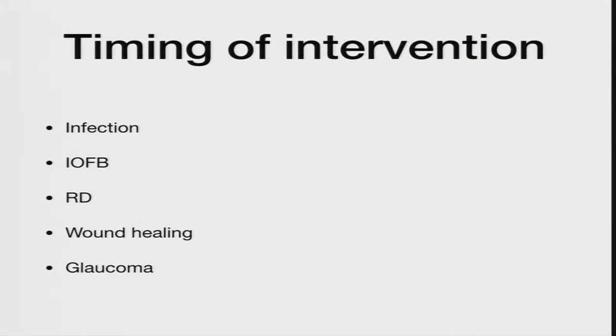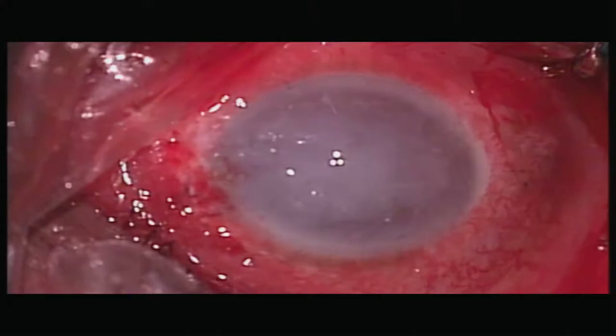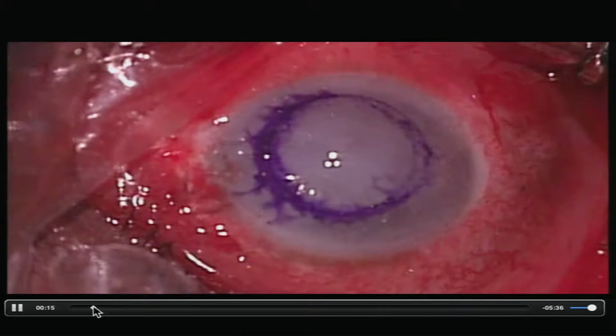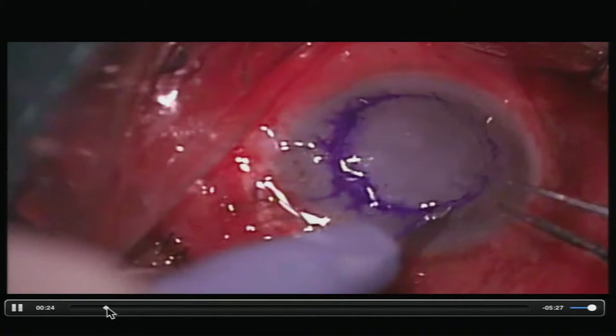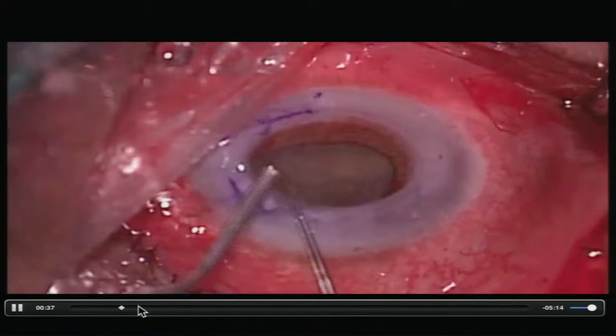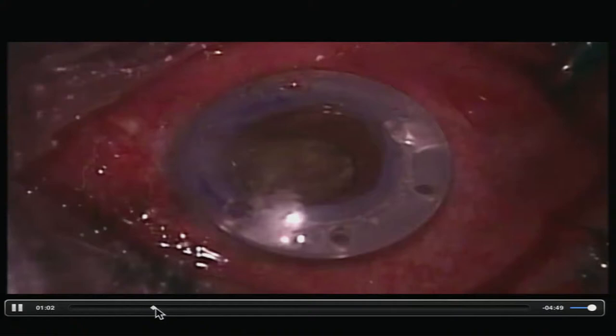All ghost cells come from the posterior segment, so you must do a thorough vitreous lavage and vitreous base shaving. Leftover vitreous skirt will capture and release cells, causing recurrent glaucoma. This patient had retinal detachment with panophthalmitis secondary to blast injury. The fellow eye was phthisical, so we could not wait for corneal clearing. We had to proceed with a keratoprosthesis despite the cornea still having cellular infiltrate, as this was the only seeing eye.